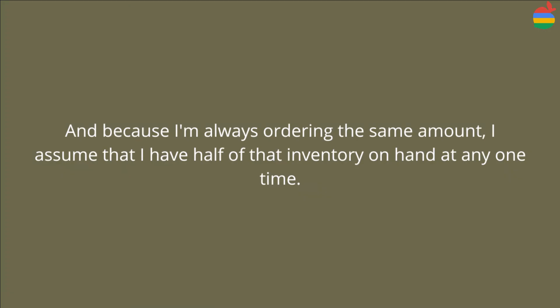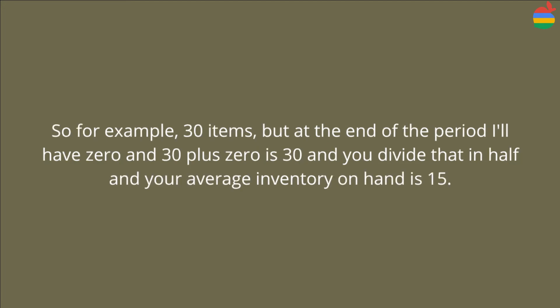Next I need to calculate my holding cost. Because I'm always ordering the same amount, I assume I have half of that inventory on hand at any one time. On day one I will have the full complement — for example 30 items — but at the end of the period I will have zero. So 30 plus zero divided by two gives an average inventory on hand of 15.